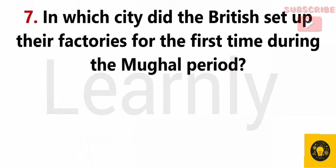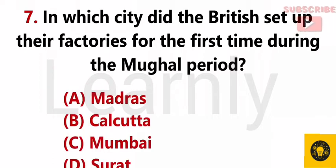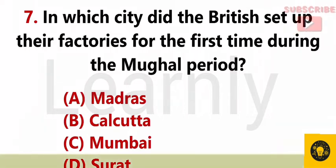In which city did the British set up their factories for the first time during the Mughal period? Answer D. Surat.